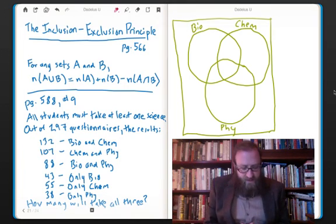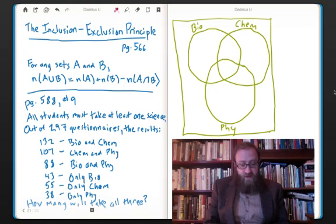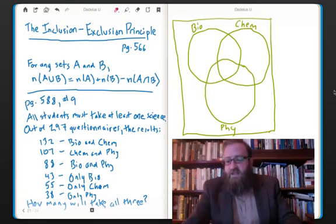132 intend to take biology and chemistry. 107 intend to take chemistry and physics. 88 intend to take biology and physics. 43 intend to take only biology. 55 intend to take only chemistry, and 38 intend to take only physics. The question is, how many students intend to take all three science courses?